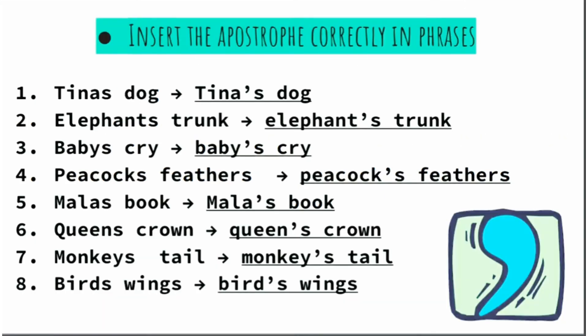Dear children, now we have to insert apostrophe correctly. Tina's dog. So children, the dog belongs to Tina. So how will we be writing? Tina apostrophe S, dog.